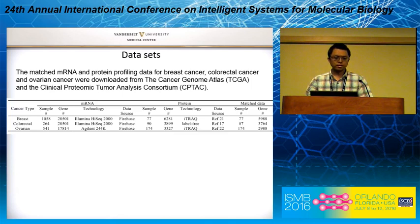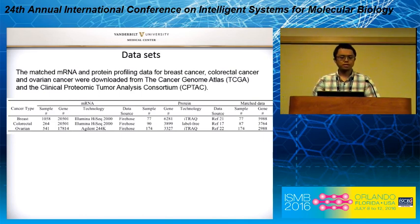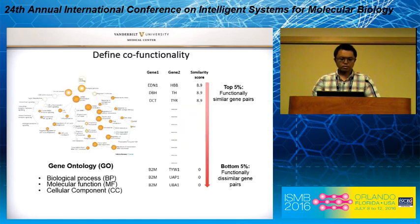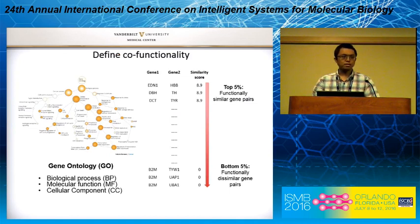To answer this question, we used matched mRNA and protein profiling data for breast cancer, colorectal cancer, and ovarian cancer from TCGA and CPTAC to construct co-expression networks and then compare them. To define co-functionality, we calculated the semantic similarity score of each gene pair based on gene ontology.